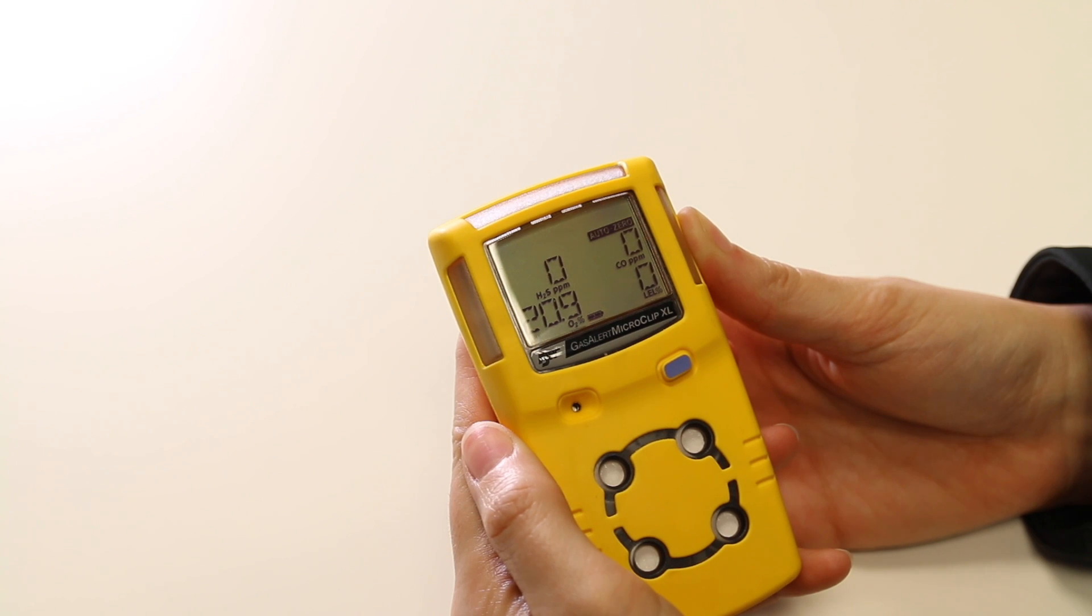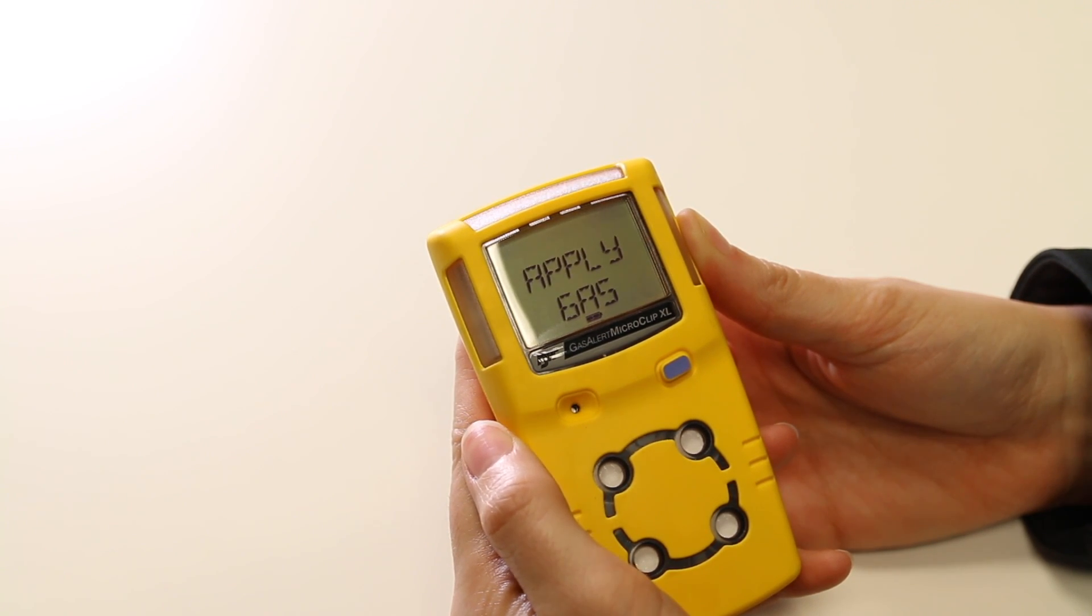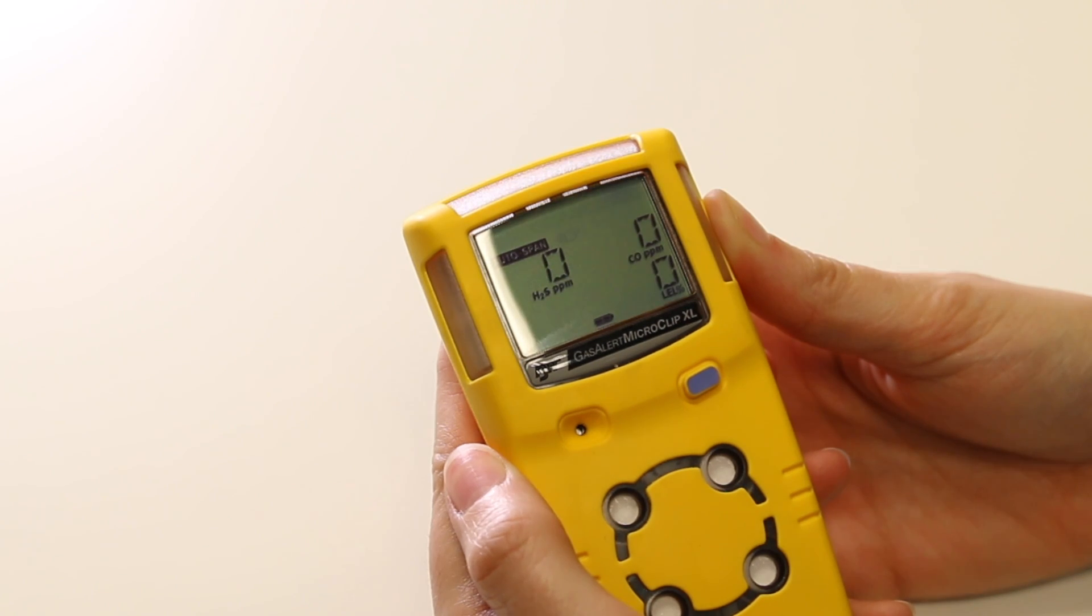When the AutoZero is complete the LCD will show apply gas. When the AutoSpan message appears with the flashing bottle symbol then it's time to connect the cylinder.